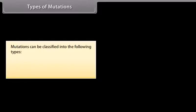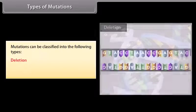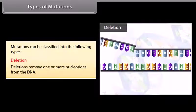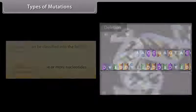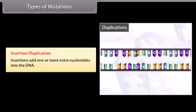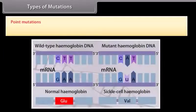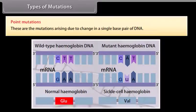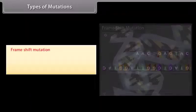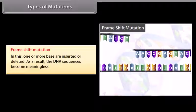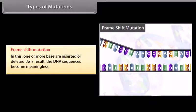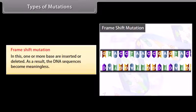Types of mutations. Mutations can be classified into the following types: Deletion — deletions remove one or more nucleotides from the DNA. Insertion or duplication — insertions add one or more extra nucleotides into the DNA. Point mutations — mutations arising due to the change in a single base pair of DNA. Frame shift mutation — one or more bases are inserted or deleted, causing the DNA sequences to become meaningless.